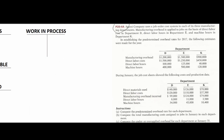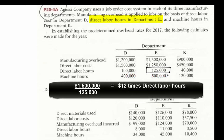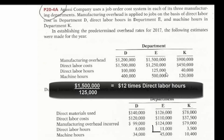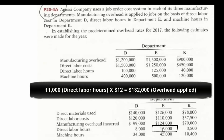In Department E, all employees make about the same hourly wage, so instead of direct labor costs they use direct labor hours. At the beginning of the year: total estimated overhead of $1,500,000 divided by estimated direct labor hours of 125,000 gives us $12 per direct labor hour. In January they had 11,000 direct labor hours, multiplied by $12 gives $132,000 applied.